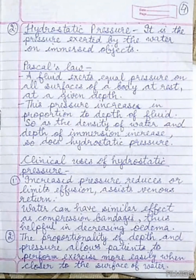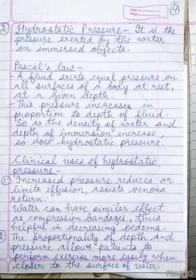The second property is hydrostatic pressure. It is the pressure exerted by water on immersed objects. Pascal's law is applied here: a fluid exerts equal pressure on all surfaces of a body at rest at a given depth, and this pressure increases in proportion to the depth of fluid. As the density of water and depth of immersion increase, so does the hydrostatic pressure. The clinical uses of hydrostatic pressure include: increased pressure reduces or limits effusion, assists in venous return, and water can have a similar effect as compression bandages, thus being helpful in decreasing edema. The proportion of depth and pressure also allows patients to perform exercise more easily when closer to the surface of the water.